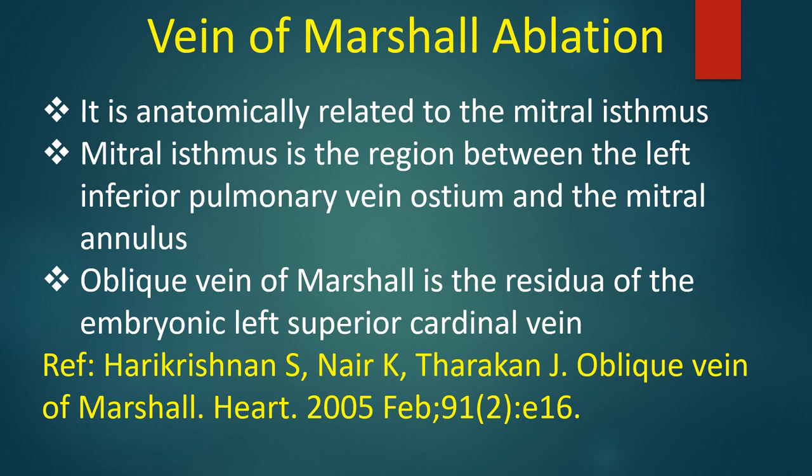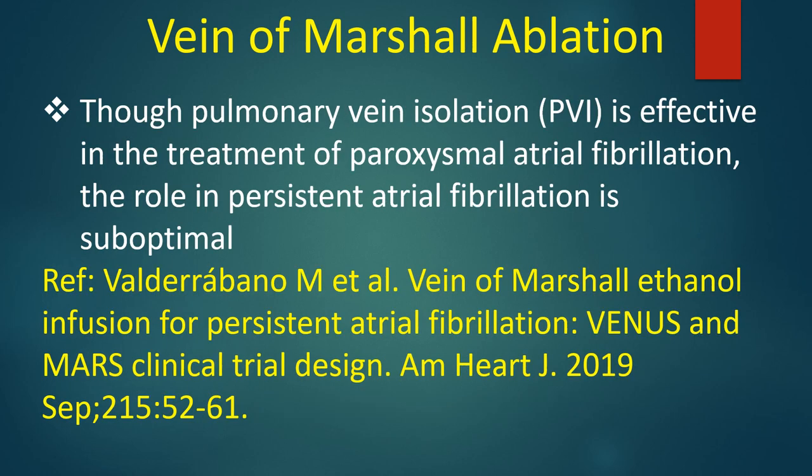The mitral isthmus is the region between the left inferior pulmonary vein ostium and the mitral annulus. The oblique vein of Marshall is the residua of the embryonic left superior cardinal vein. Though pulmonary vein isolation is effective in the treatment of paroxysmal atrial fibrillation, its role in persistent atrial fibrillation is suboptimal.